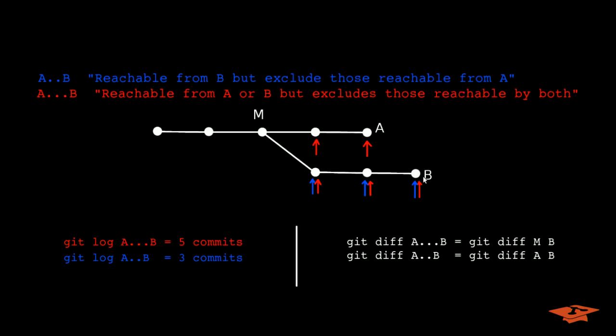The commits that are reachable from B are obviously the B commit, the parent of the B commit, and the parent of that commit, and M, and everything behind M in the tree. So those are the commits reachable from B. It's basically B and everything backward in time from B.